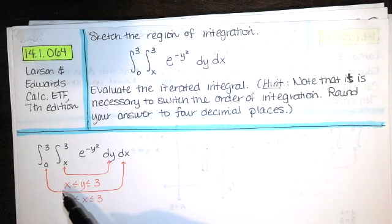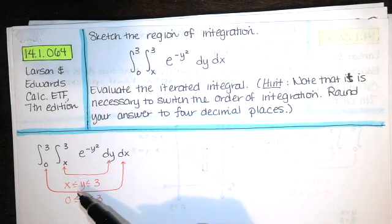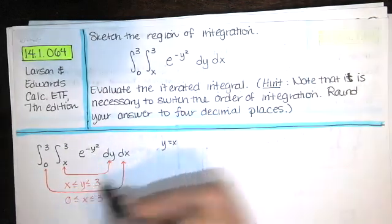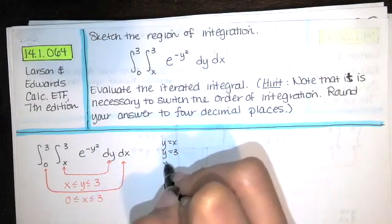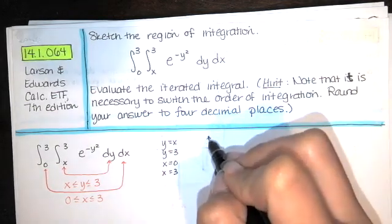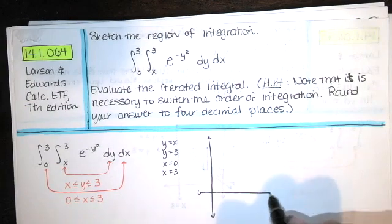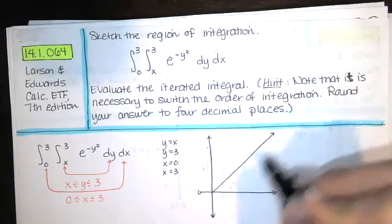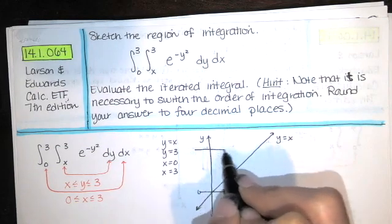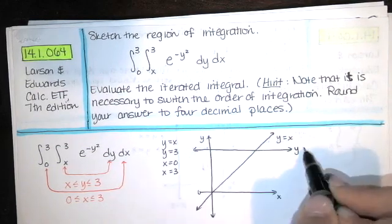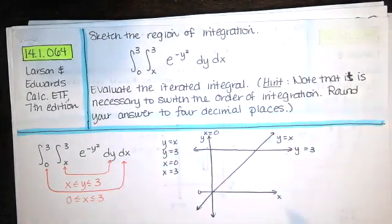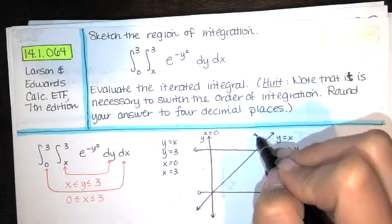I tend to think of it as having four curves. We have y = x, we have y = 3, we have x = 0, and x = 3. Those are the boundaries of our region of integration. So I would start by sketching those: y = x looks like a diagonal line, y = 3 is a horizontal line, x = 0 is the y-axis, and x = 3 is a vertical line.